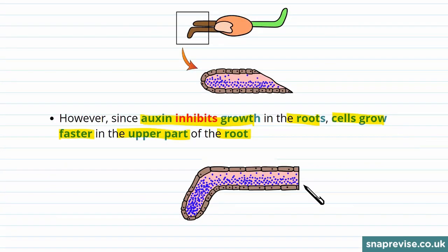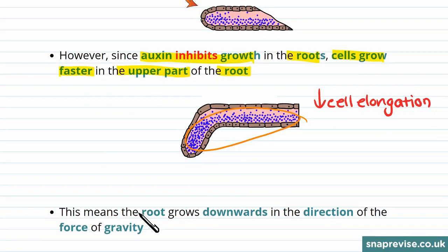You can see there's lots of auxin in the lower part of the root, which inhibits cell elongation there. This means that the root grows downwards in the direction of the force of gravity.